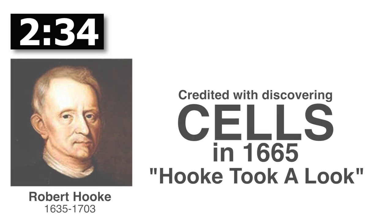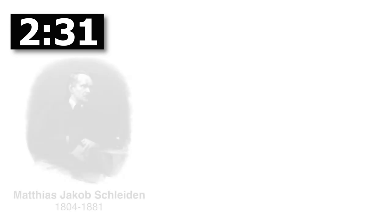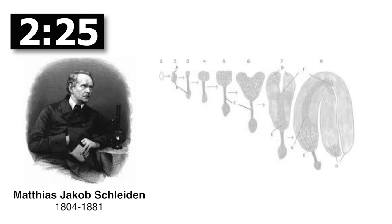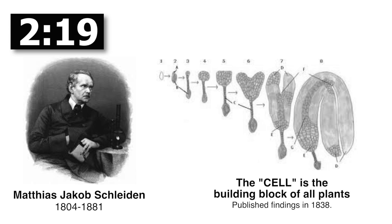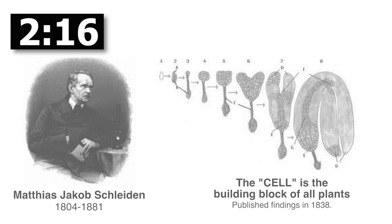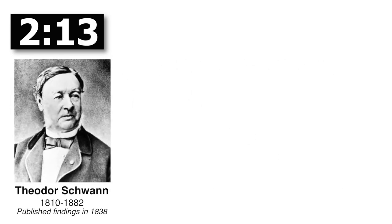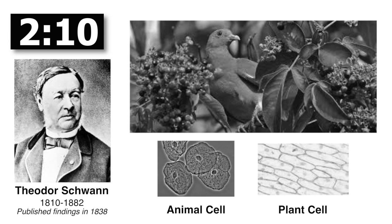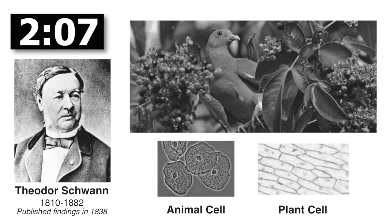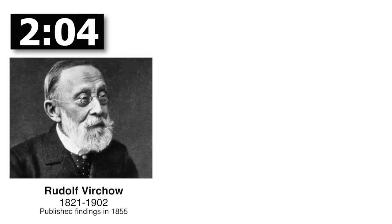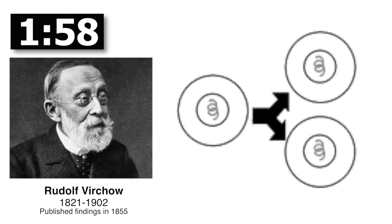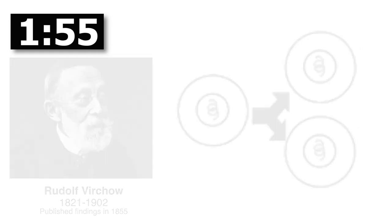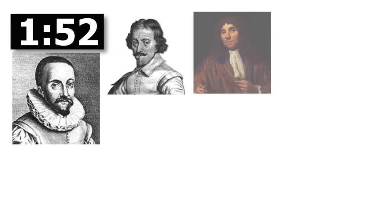Over time, other scientists continued to contribute to the understanding of cells. Matthias Jacob Schleiden was a German botanist in 1838 who published his findings that all embryonic plant cells began as a single cell and that the cell itself was the building block of all plants. Theodore Schwann was a German biologist in 1838 who concluded that both animals and plants were composed of cells. In 1855, Rudolf Virchow, a German physician, was experimenting with diseases and came to the conclusion that all cells arise from other cells. The combination of these scientists' theories and conclusions is currently the basis of the cell theory.